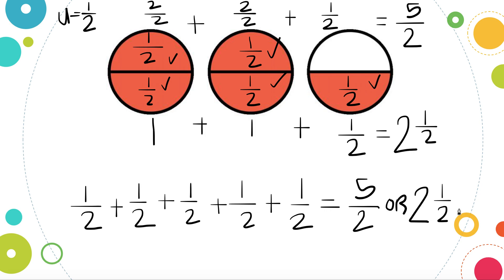You can find the sum of unit fractions with area models, set models, and even the number line. Here we did it once with a proper fraction, and once with an improper fraction and mixed number. Remember, your unit fraction must always have a numerator of one — it always represents one piece — and if we are finding the sum, we are adding those pieces together.